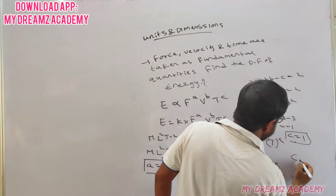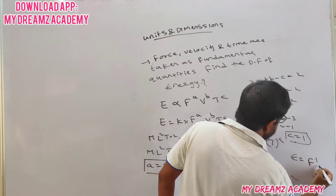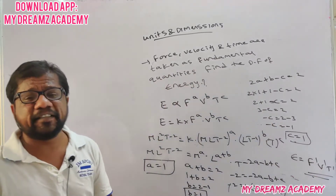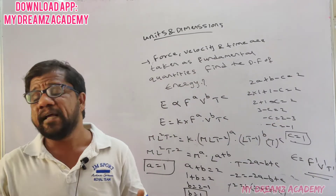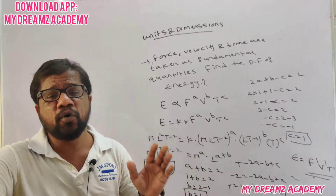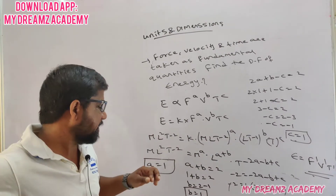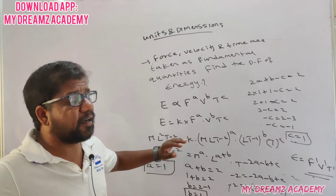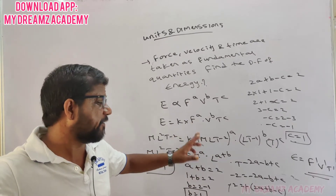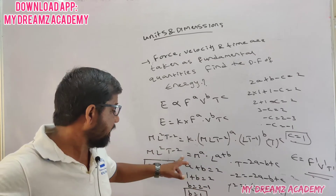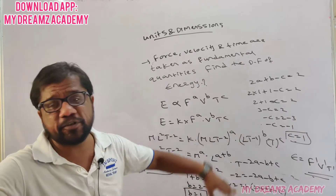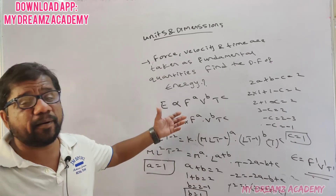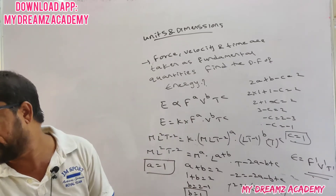So the dimensional formula of energy in terms of the new fundamental quantities is F¹V¹T¹. This is the most regularly repeating model in the exam. Students often get confused by it. To check options, you can substitute the option values back, but directly solving as shown is the cleaner approach. This is one of the most important models.